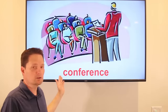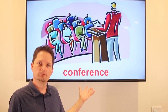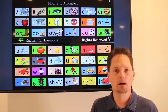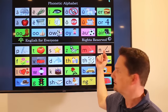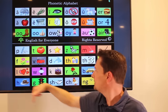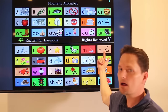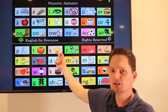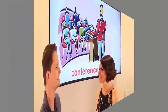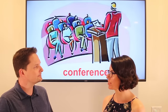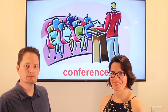Example: conference. We don't say 'conference,' it's 'conference' — two syllables. There's a conference at the hotel — a business conference. Is there a business conference at the hotel? Yes, there's a business conference at the hotel. Very good.